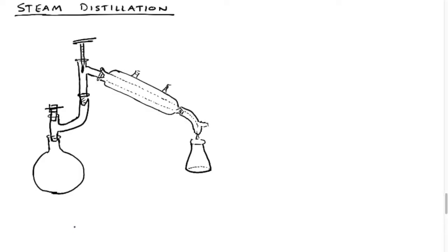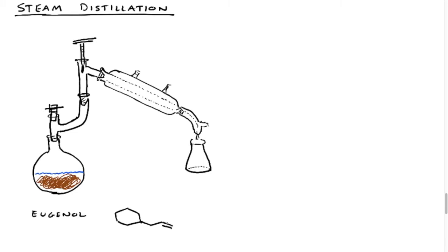This will be our setup for the steam distillation: a round bottom flask, a Claisen adapter with a stopper, a three-way adapter with a thermometer adapter and thermometer, a condenser with cold water, and a vacuum adapter to collect distillate in an Erlenmeyer flask. In the round bottom flask we'll have water and cloves — a wet powdery mess of cloves. The main component giving rise to the odor and taste of cloves is eugenol, which has the structure shown here.